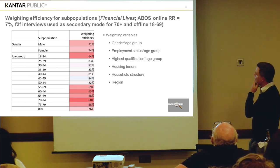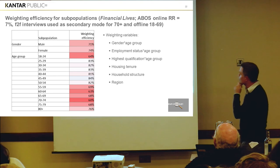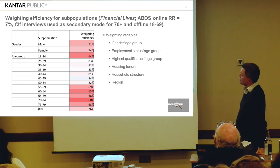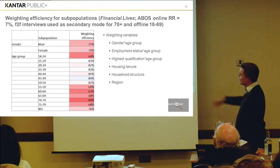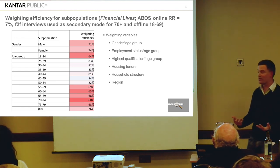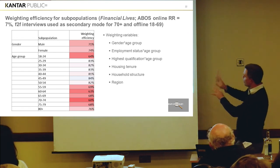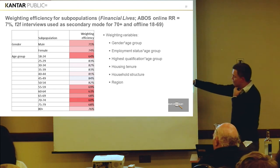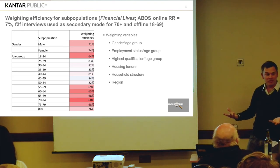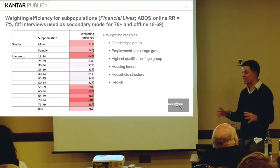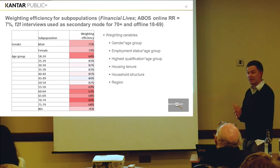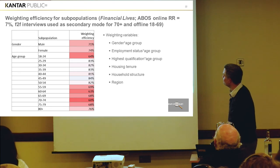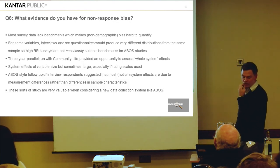For the Financial Life survey — a 7% ABOS online response rate with face-to-face interviews used as a parallel mode for people aged 70 plus and offline who are younger — the weighting efficiency is more like 70%, so I had to do a bit more to it. The weighting variable is actually slightly more comprehensive. Here the least amount of weighting was done for the middle age groups and the most for the older and youngest age groups — actually the reverse of Community Life. So two ABOS surveys aren't exactly the same.